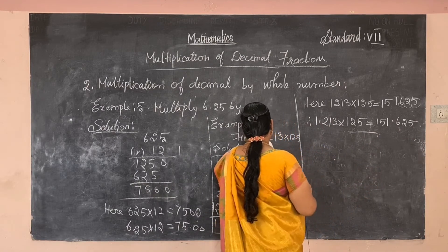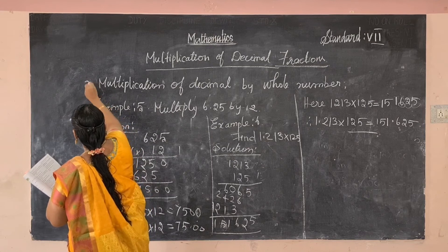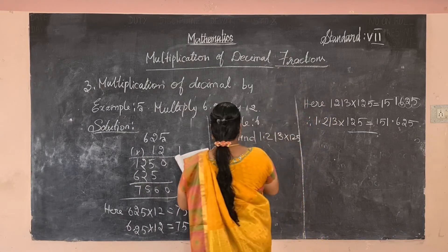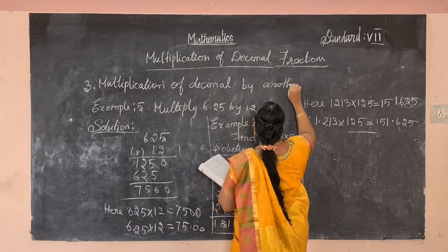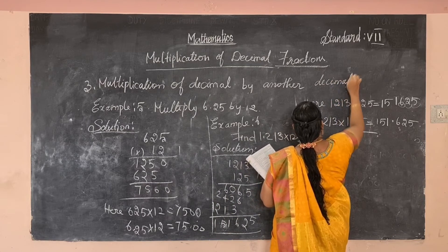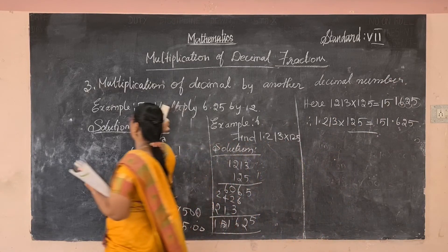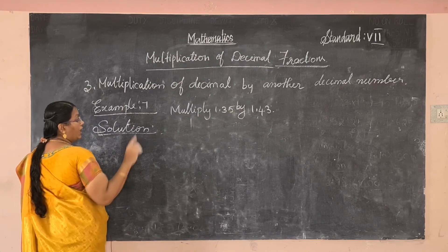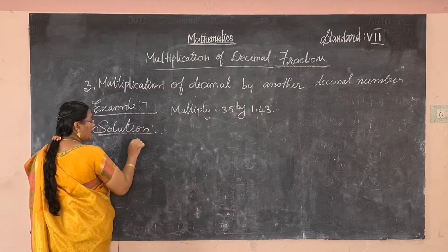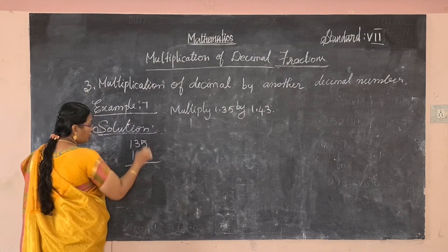Example 6 is completed. The third type is multiplication of a decimal by another decimal. Multiply 1.35 by 1.43. First, consider the numbers 135 by 143 without the decimal point, then multiply as usual.